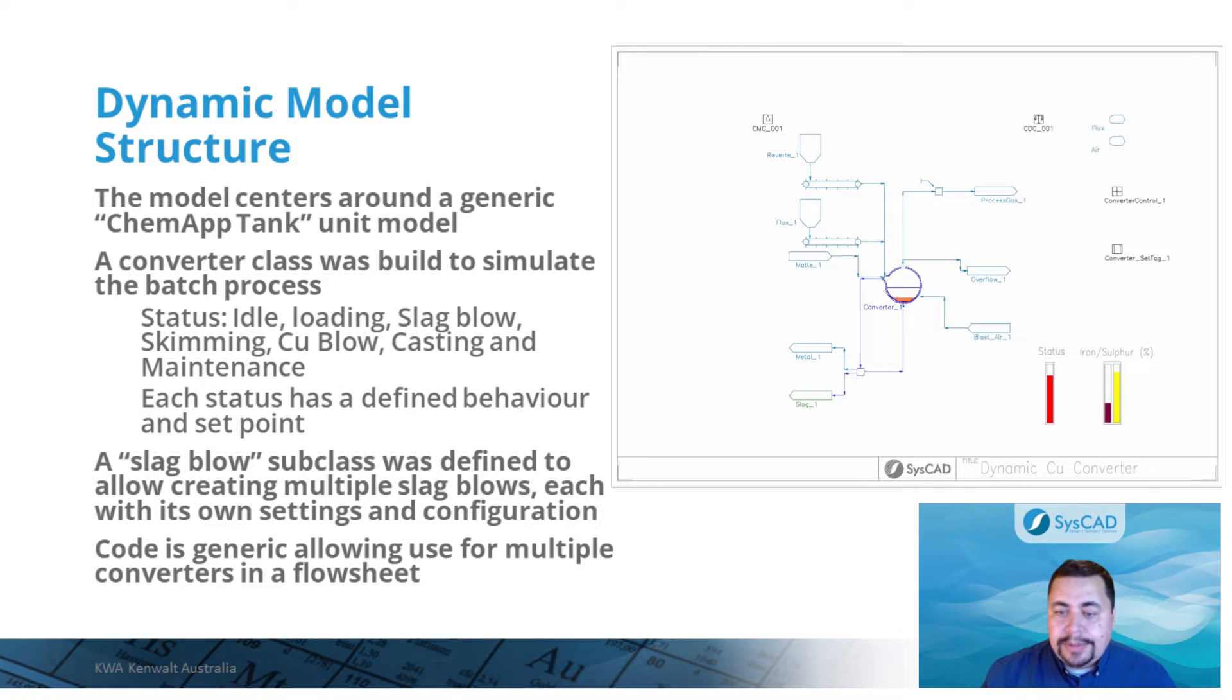Predefined events can trigger changes in the process. For example, when the iron endpoint target during a slag blow is reached, the slag skimming sequence is initiated. In addition, to add flexibility to the model, the subclass for slag blows was defined. This is useful to allow modeling situations with two or three slag blows, or to set different endpoints, targets, or operating parameters for each slag blow. The reusable converter class can be used to model multiple converters in a SysCAD plant model.